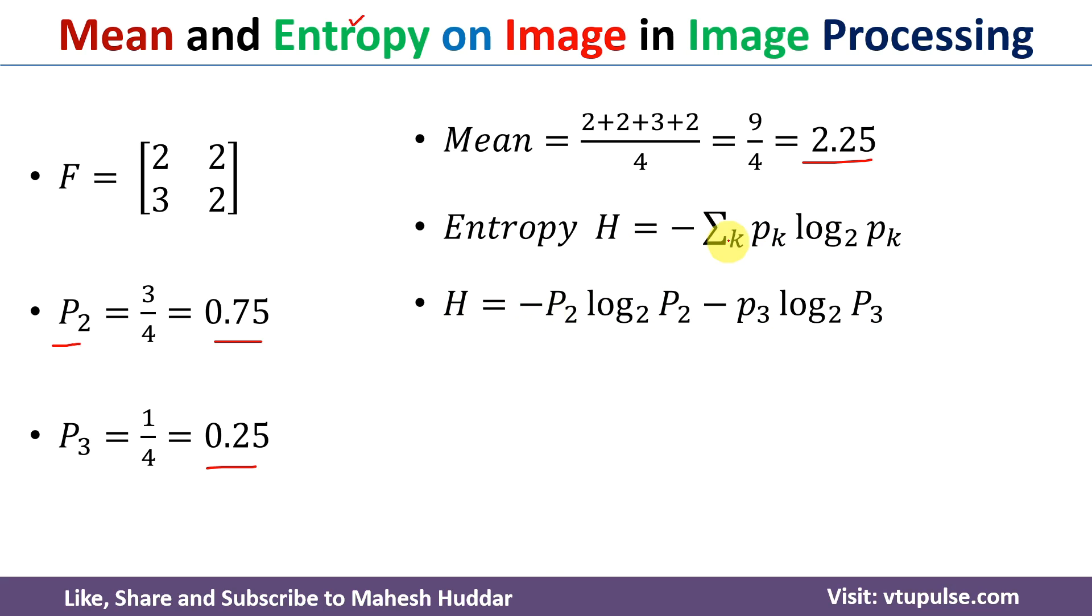H is equivalent to minus, as said earlier, the first case k is equivalent to 2: p2 log p2 to the base 2 minus, second time k will become 3, that is the second pixel value: p3 log p3 to the base 2. We have already calculated p2 as well as p3, we need to put these values in this equation.